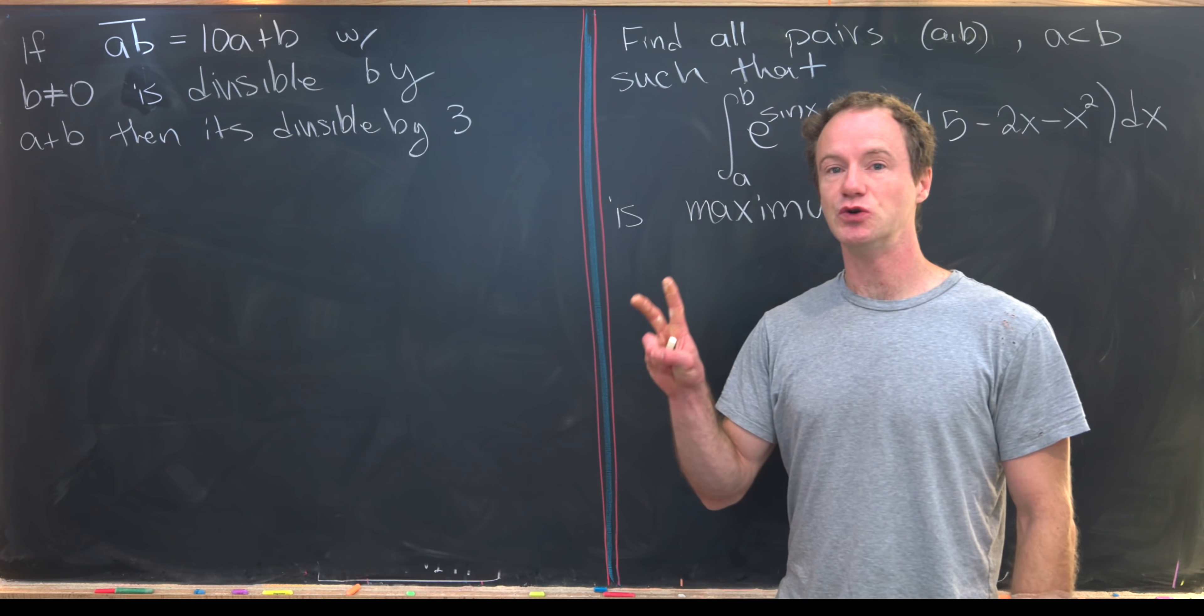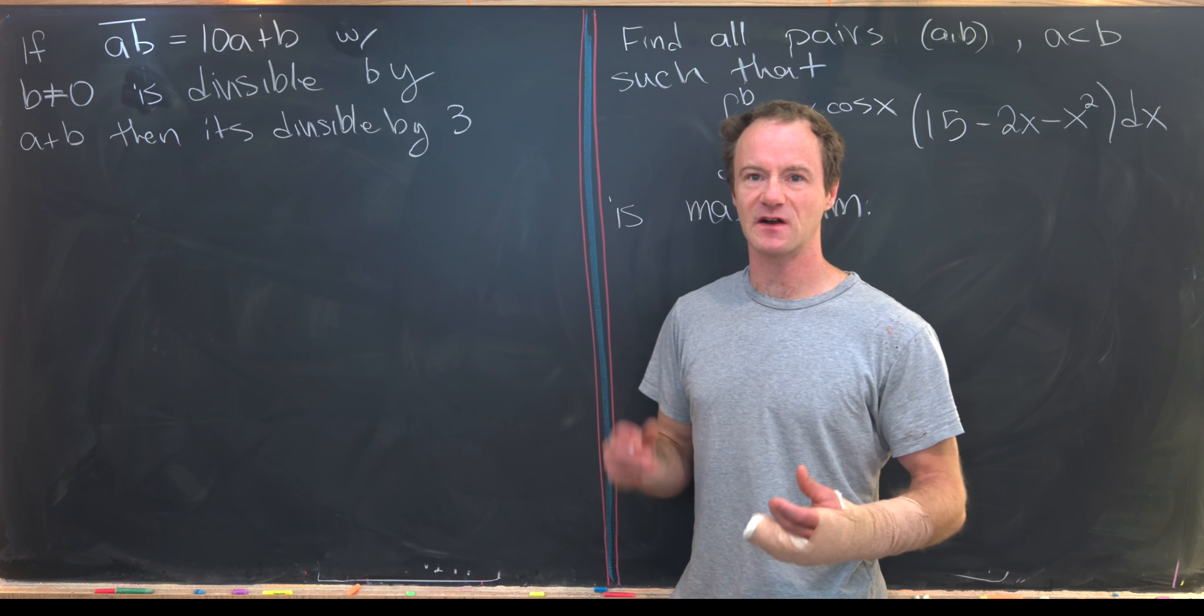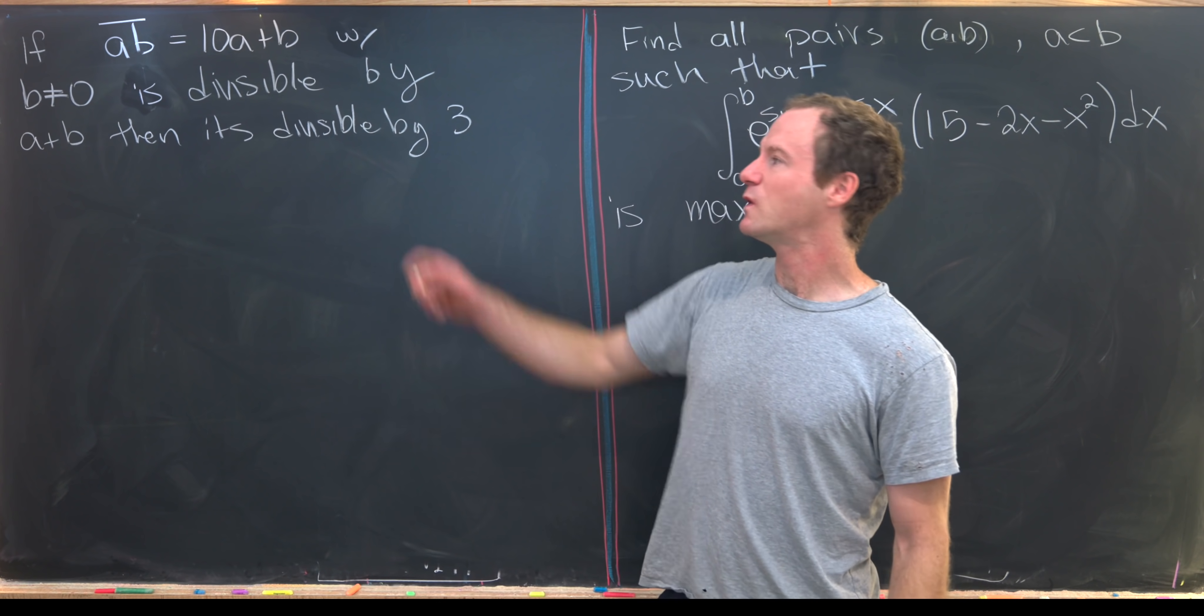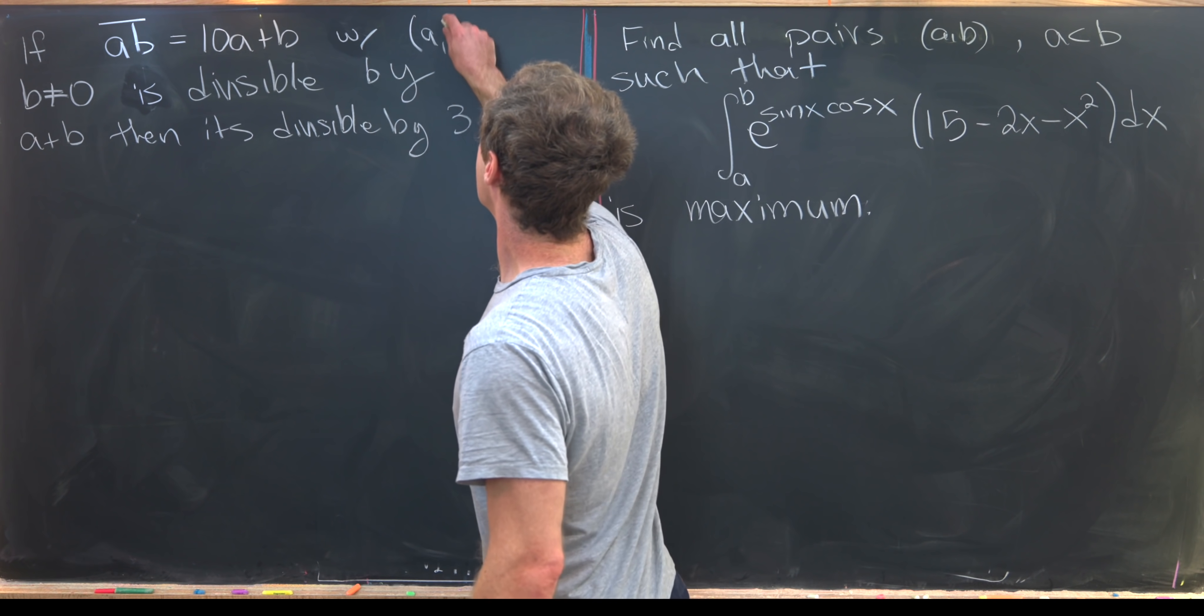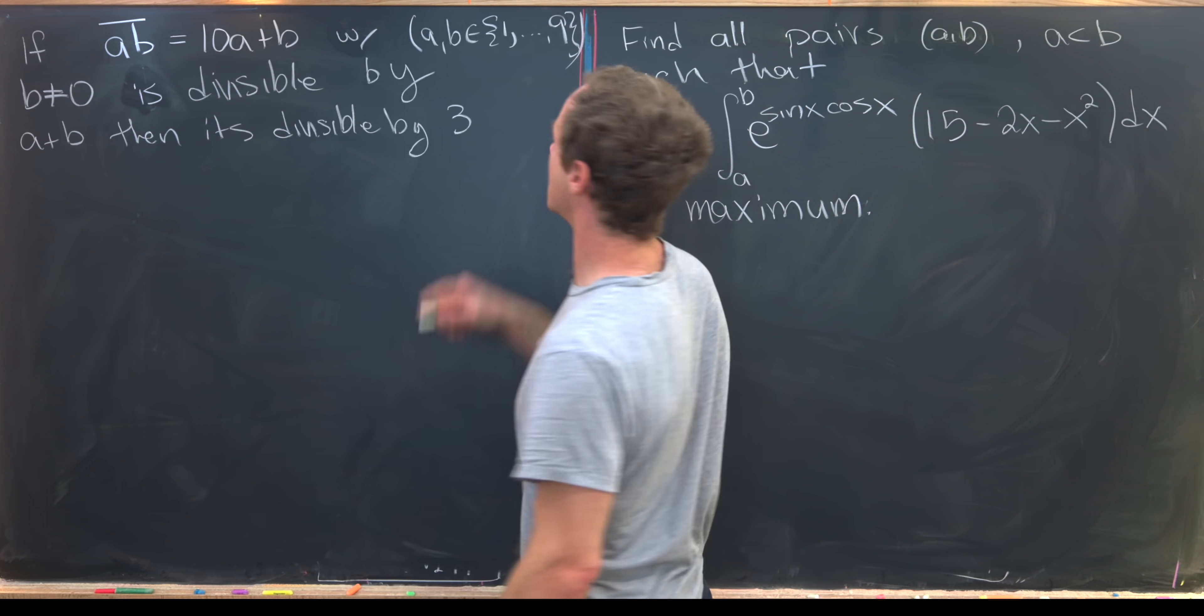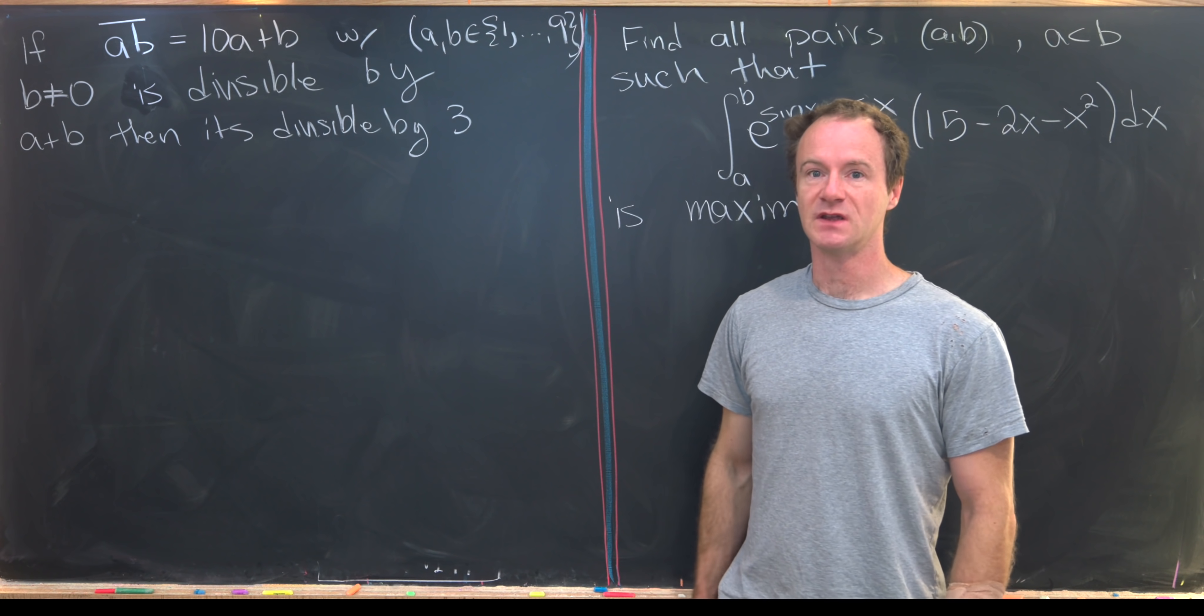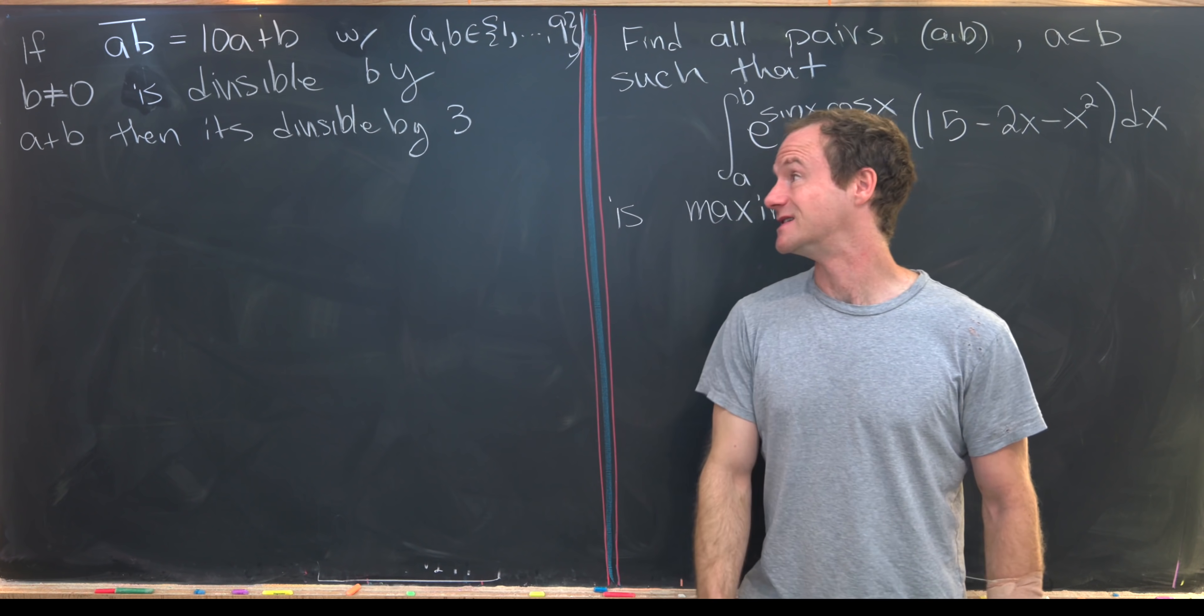So let's suppose we've got a two-digit number. I'm going to write it as a, b with a line over it. I think that's fairly standard notation for writing the digits of a number. In other words, that's 10a plus b. And we want to also assume that b is not equal to zero. And that means that a and b come from the set one up to nine. So built into this is that a is also not equal to zero because otherwise we would have a one-digit number. In other words, we've got a two-digit number. Those two digits come from the set one to nine.